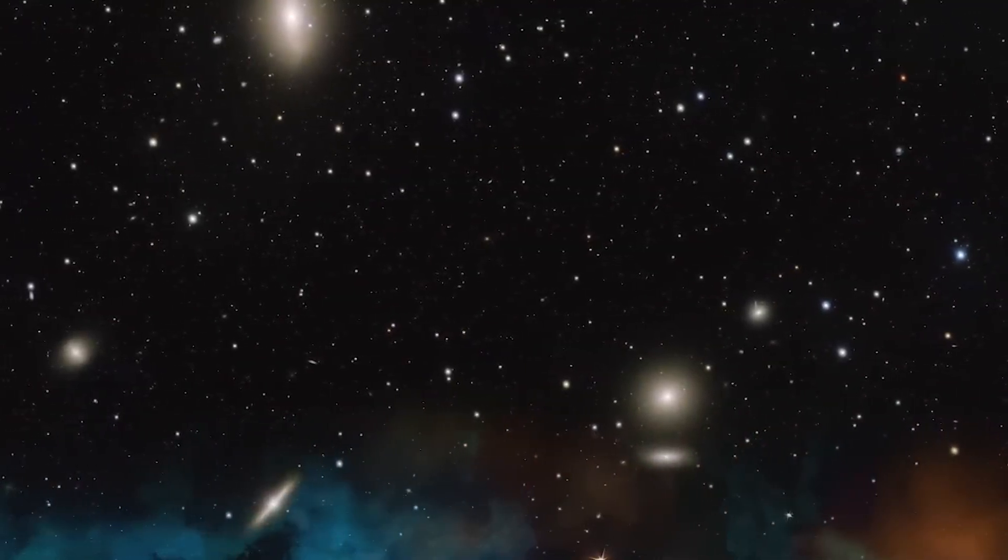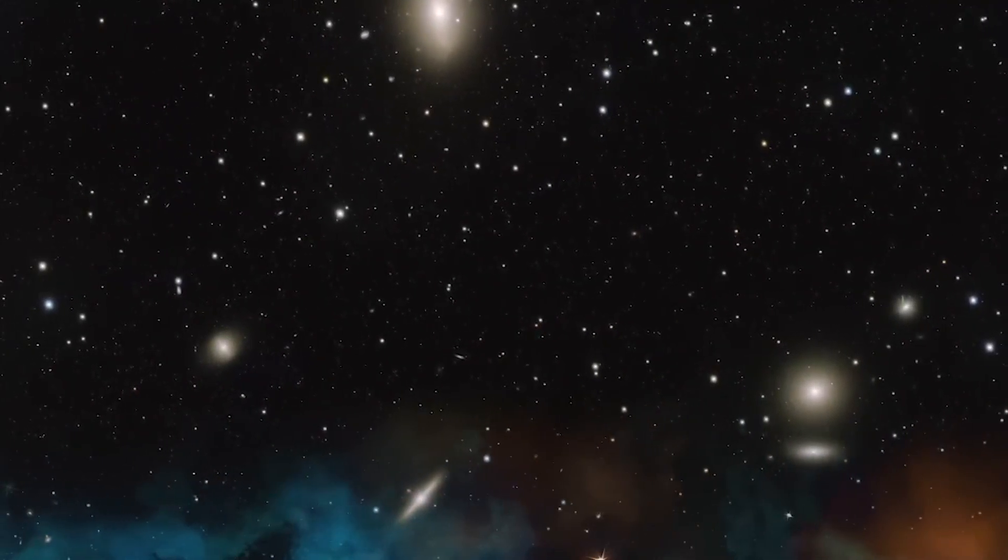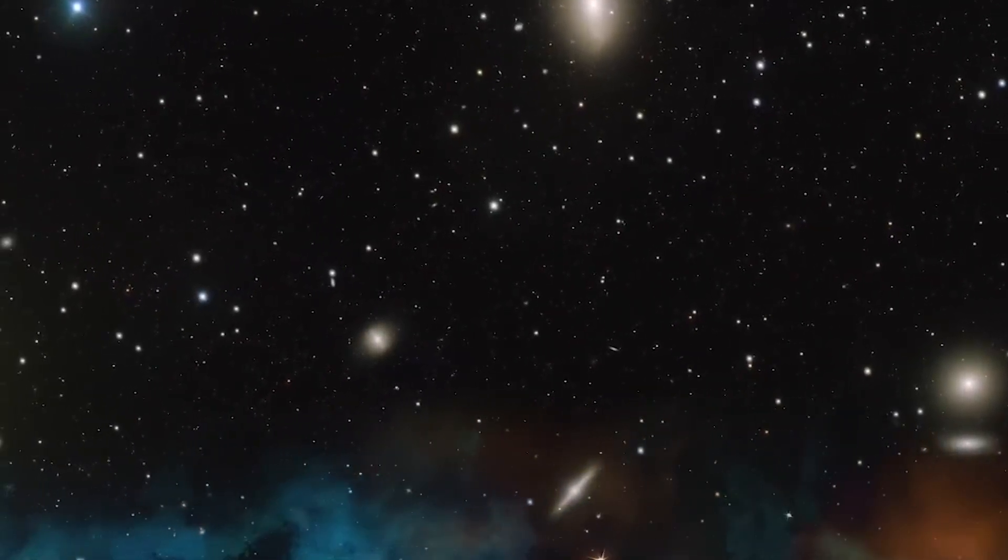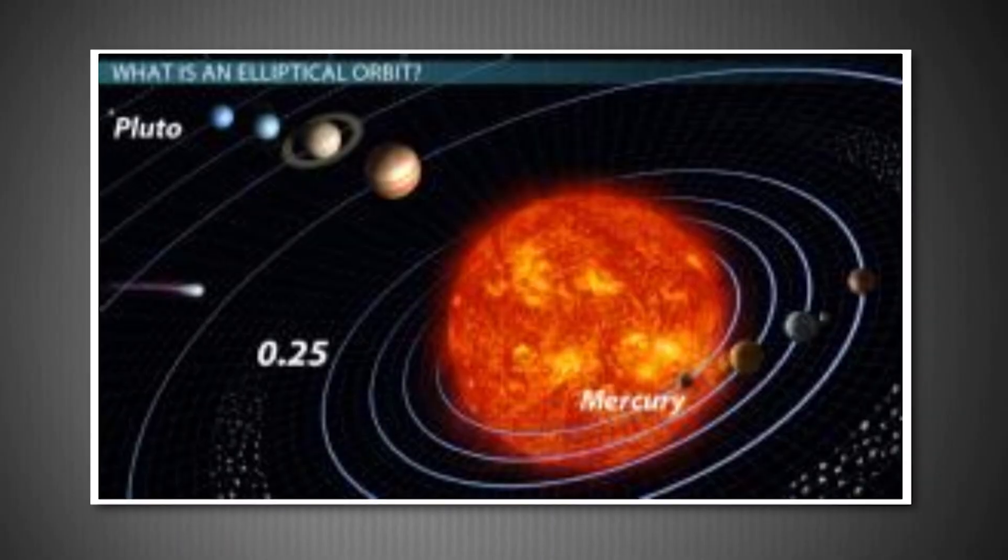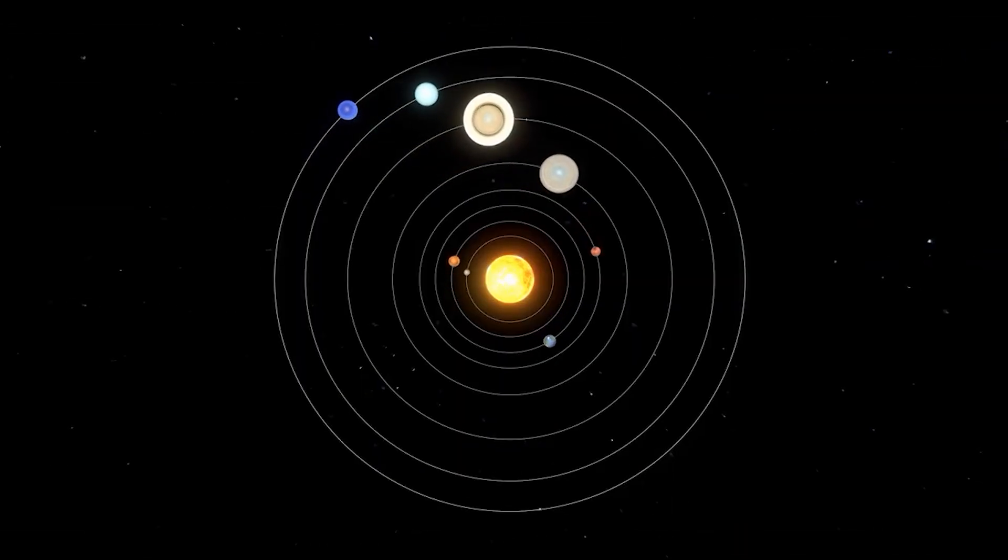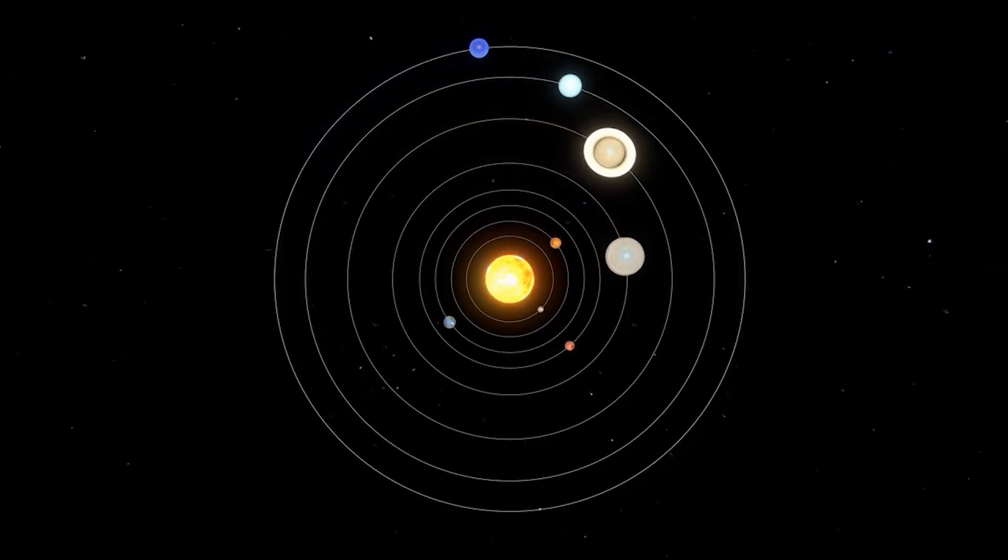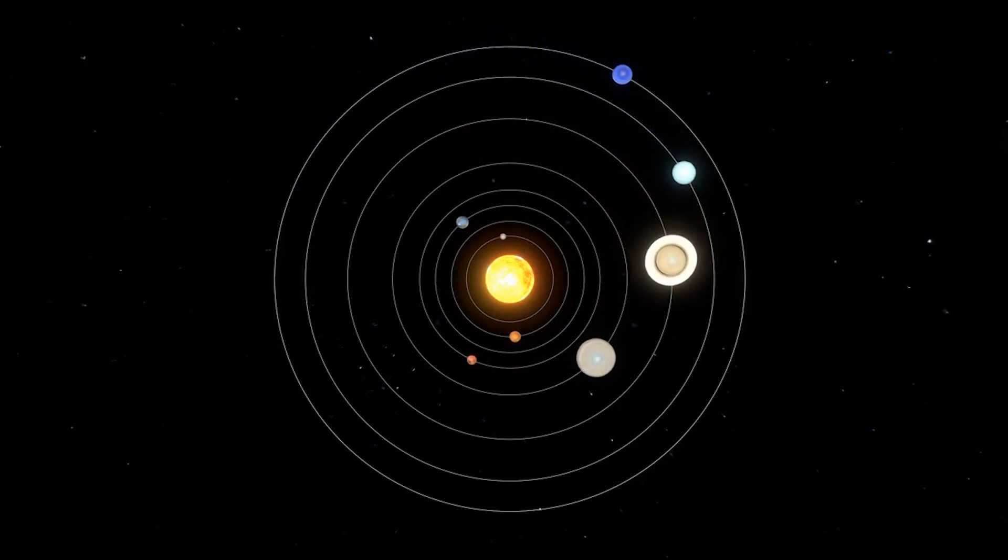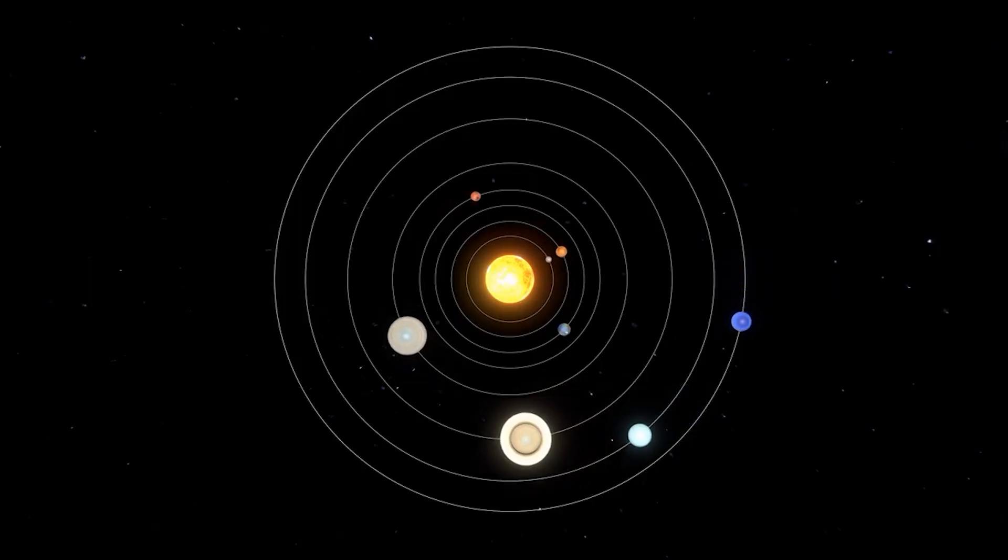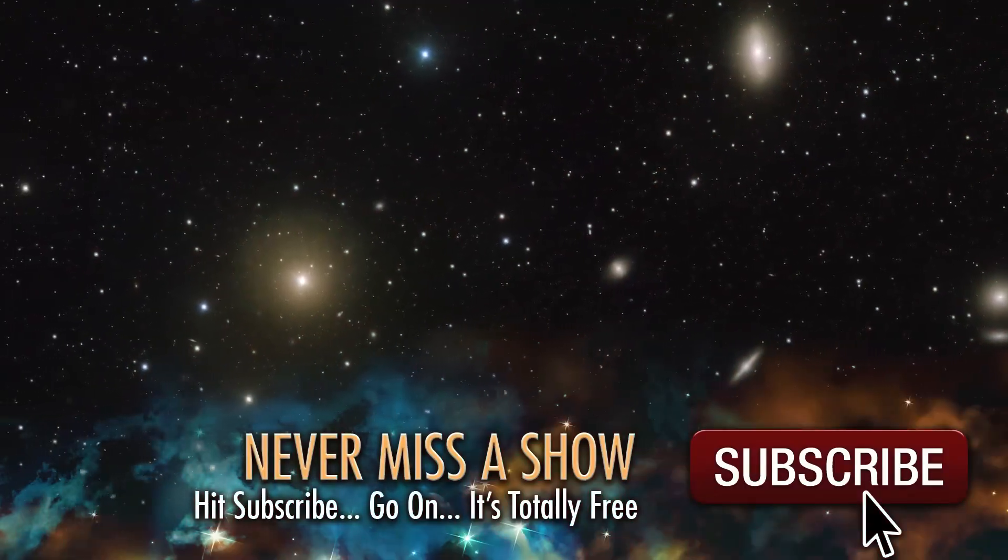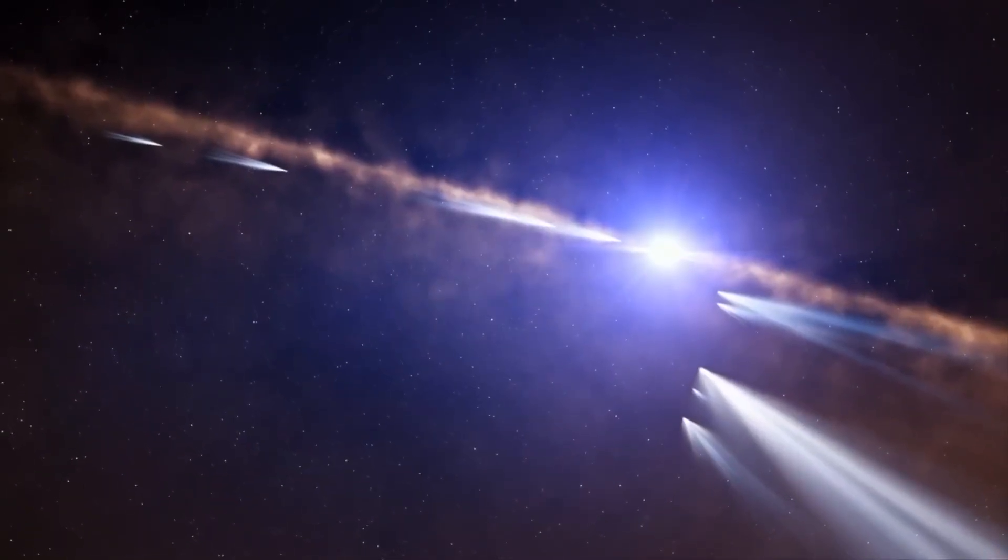But here's where it gets really interesting. When astronomers started calculating its trajectory, they realized this object wasn't following a normal elliptical orbit around the sun, like comets and asteroids born in our solar system. Instead, it was on what's called a hyperbolic trajectory, essentially a path that would carry it right through our solar system and back out into interstellar space, never to return.